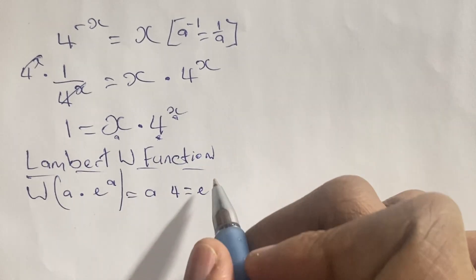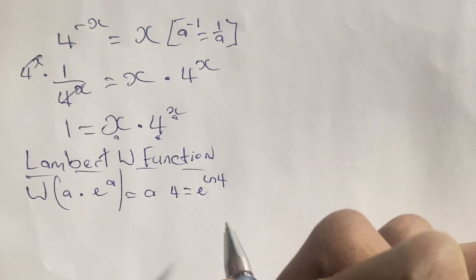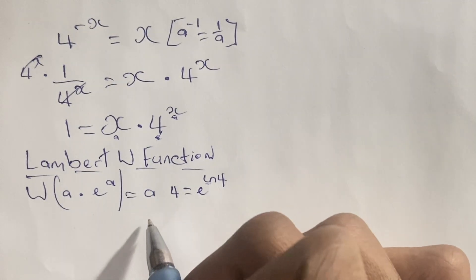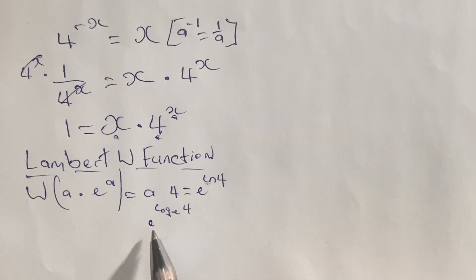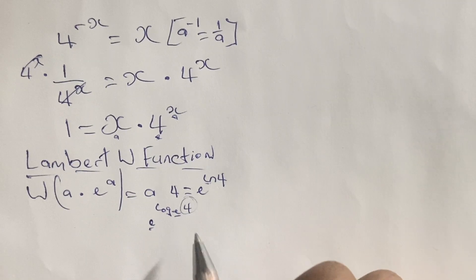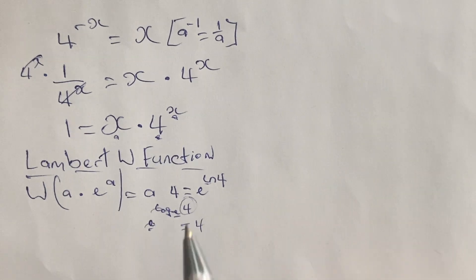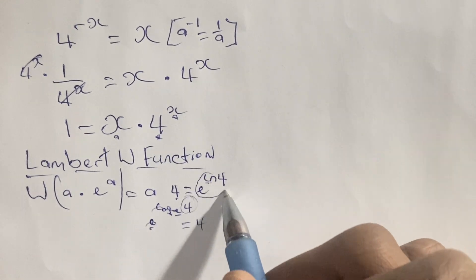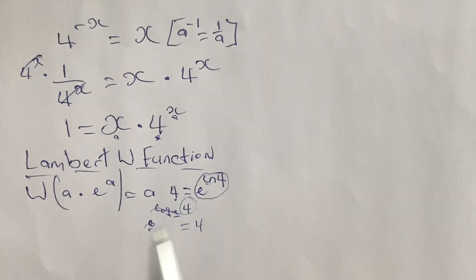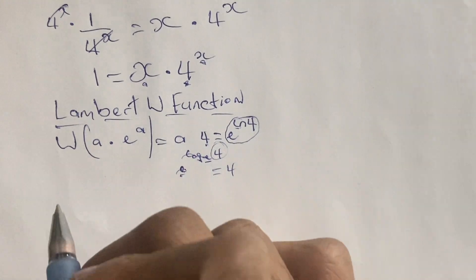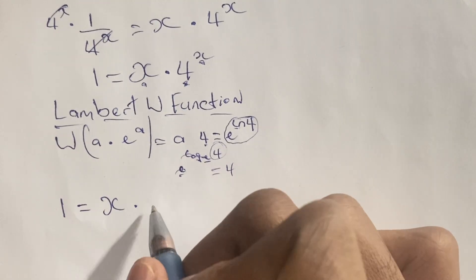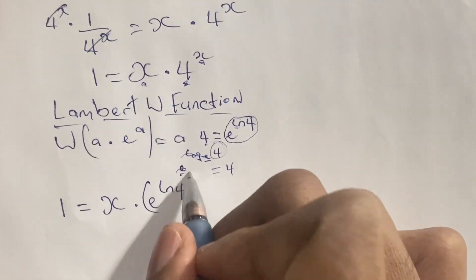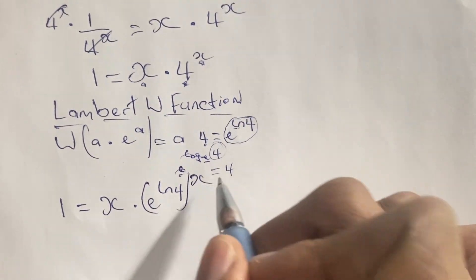Now 4 can be written in the form of e by having e to the power of ln 4. The idea is that ln means natural log where the base is e. So we have e to the power of log base e of 4, and the base e cancels out the log base e, so the result is just 4. Therefore we can rewrite 4 as e to the power of ln 4, and we rewrite our equation accordingly: 1 is equal to x times e to the power of ln 4, all bracketed, raised to the power of x.